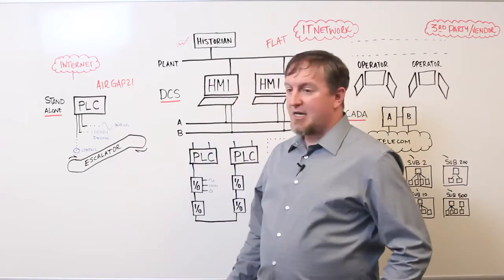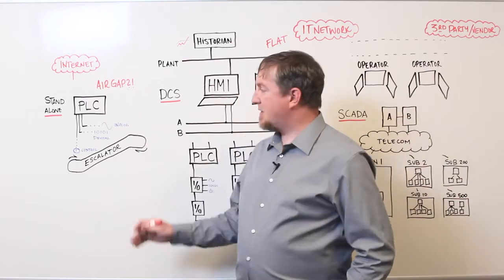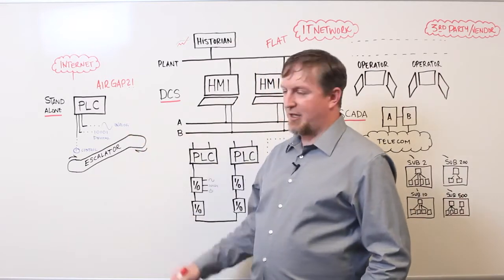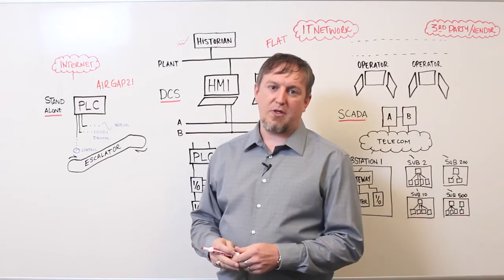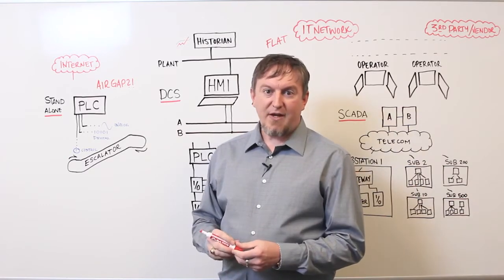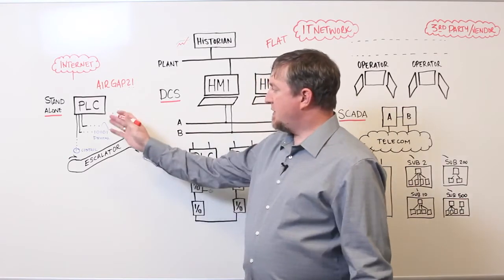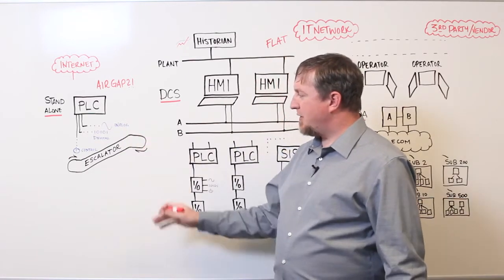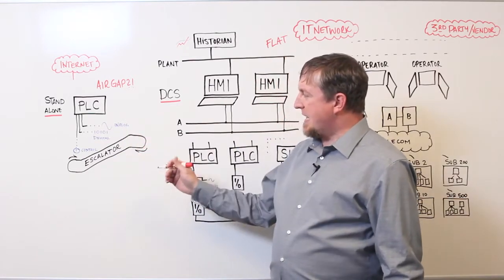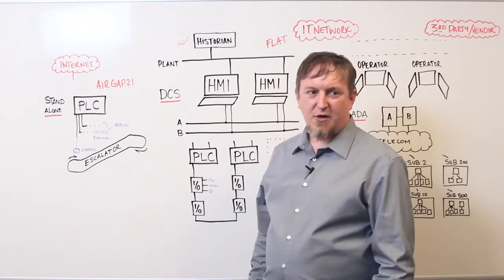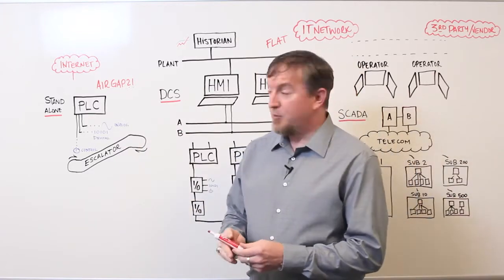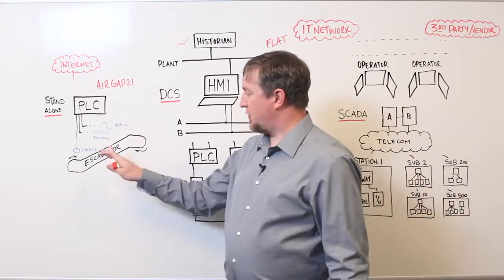But today we'll start with a standalone control system. For instance, this one might control an escalator or other things like elevators. This is a standalone PLC. It has analog inputs, digital inputs, and controls. It may not have much else. It's very simple. It has logic that controls the process.